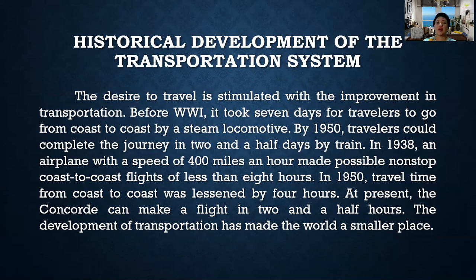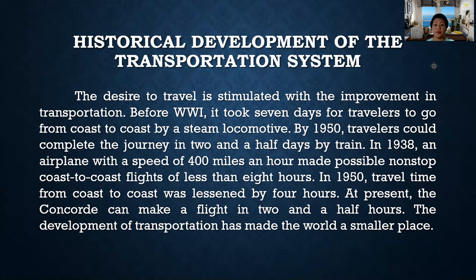Now let's proceed to the historical development of the transportation system. The desire to travel is stimulated by improvements in transportation. Before World War I, it took seven days for travelers to go from coast to coast by a steam locomotive. By 1950, travelers could complete the journey in two and a half days by train. In 1938, an airplane with a speed of 400 miles per hour made possible non-stop coast-to-coast flights of less than eight hours. In 1950, travel time from coast to coast was lessened by four hours. At present, the Concorde can make that flight in two and a half hours.